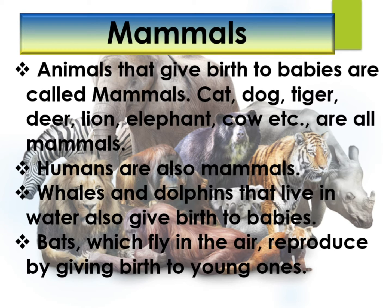Whales and dolphins are mammals — they give birth to babies and do not lay eggs like fish. Bats, which fly in the air, also reproduce by giving birth to young ones, so bats are also mammals.